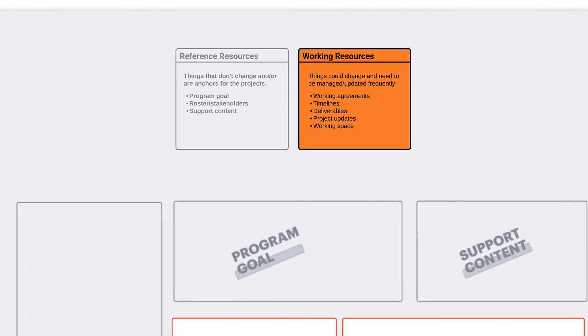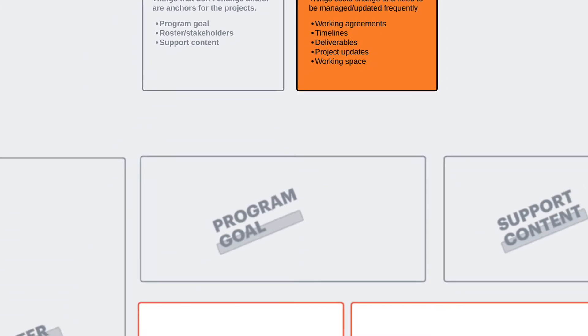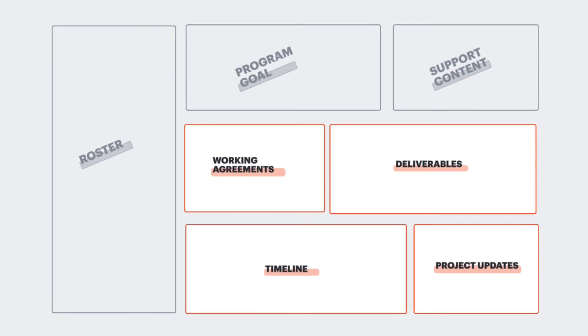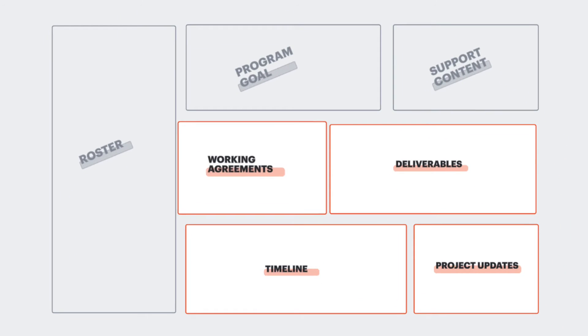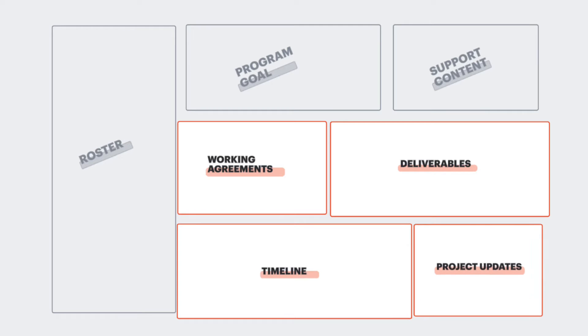Now that the team has what they need to focus, it's important to ensure that everyone is set up to work cohesively together — that is where working resources come into play. This content is susceptible to change and needs to be reviewed and updated frequently to stay aligned and assess risks or blockers. A few examples of these are working agreements, deliverables, timelines, and project updates.